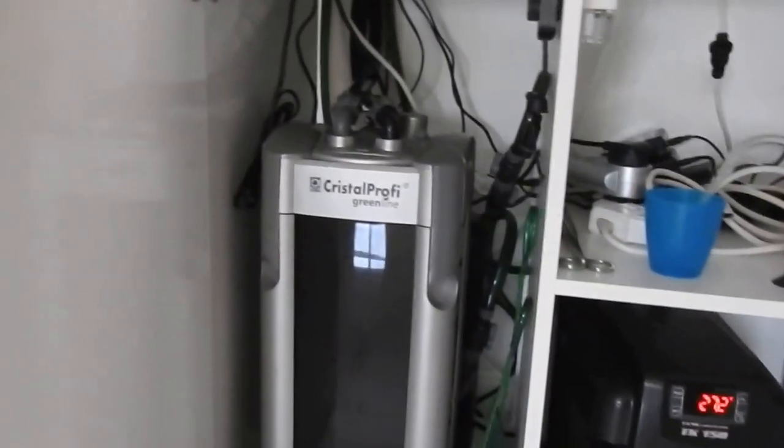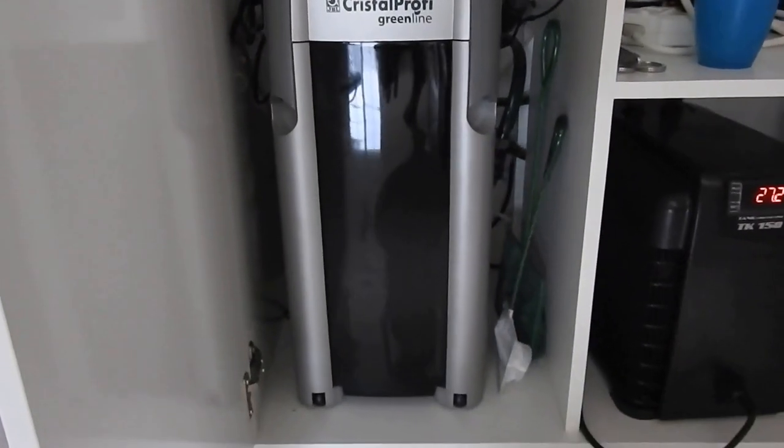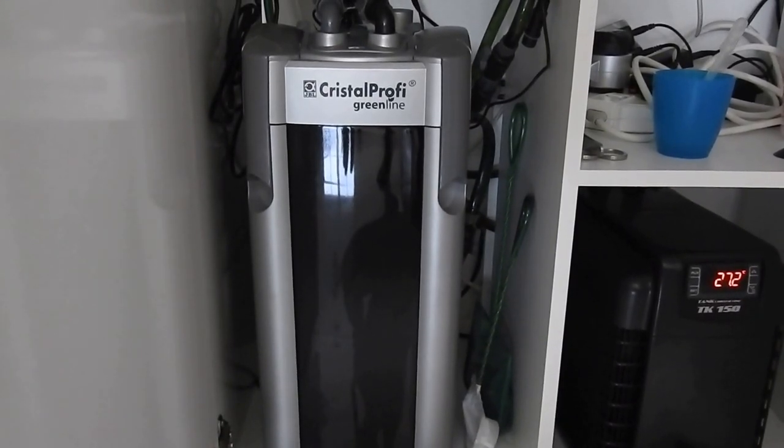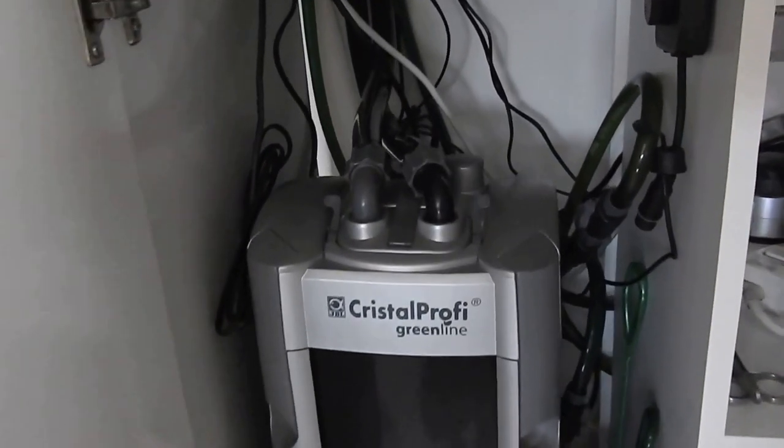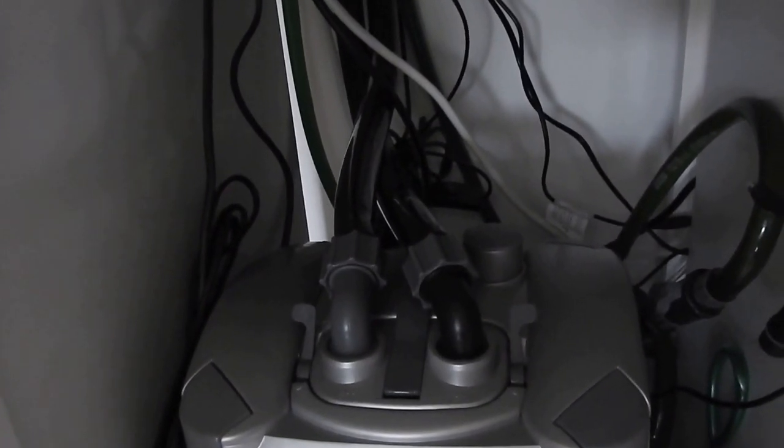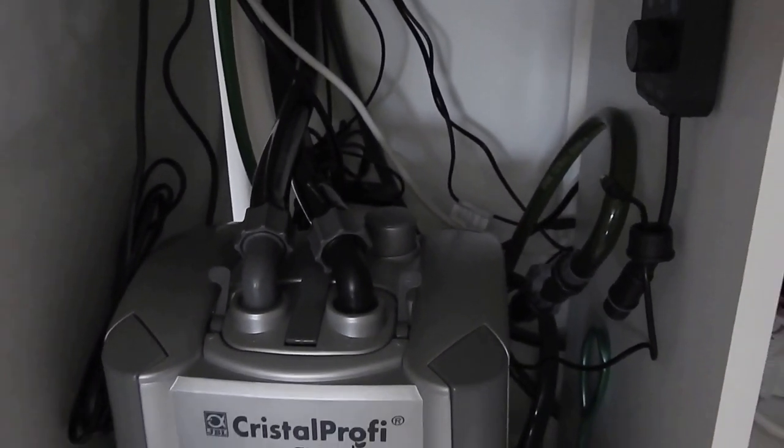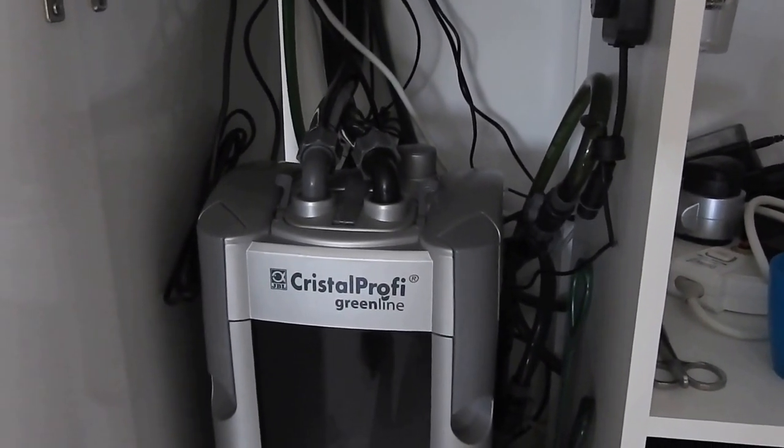Left side is the biggest JBL Crystal Profi 1901. There is a CO2 tank in the background here as well, and another Eheim filter which is connected to the chiller.